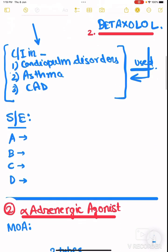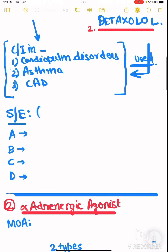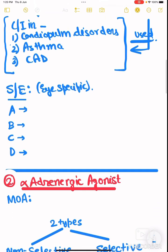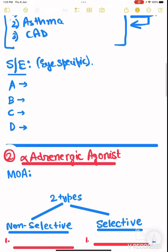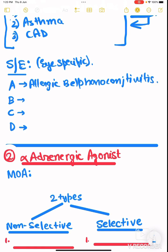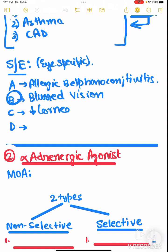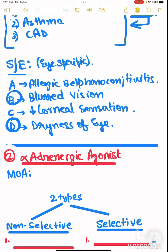The eye-specific side effects of beta blockers can be remembered by ABCD: A stands for allergic blepharoconjunctivitis, B stands for blurred vision, C stands for decreased corneal sensation, and D stands for dryness of eye. B and D are important.